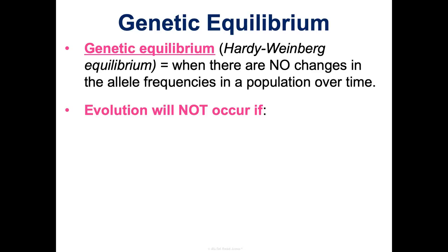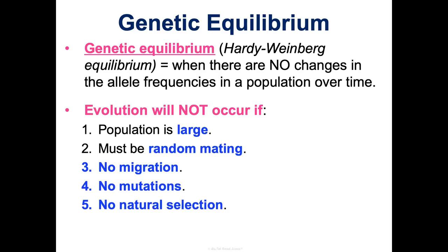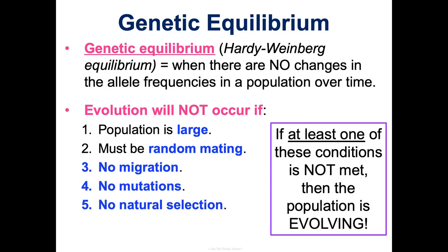The only way for genetic equilibrium to occur is if all of the following conditions are met: the population has to be very large so that genetic drift can't just wipe out half the population; there has to be random mating with no sexual selection whatsoever; there can be no migration because that introduces new genes; there can be no mutations because mutations introduce new traits; and there can be no natural selection, meaning enough resources exist so there's no competition and no one can be favored as better at surviving. If even one of these conditions is not met, the population is evolving.